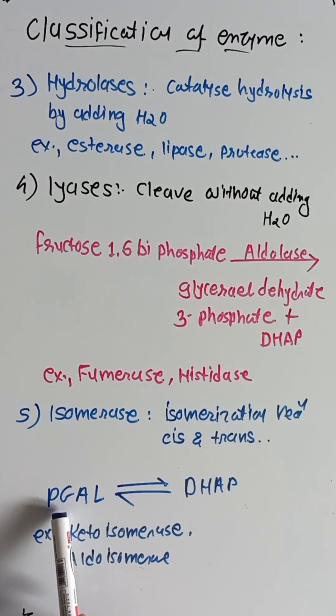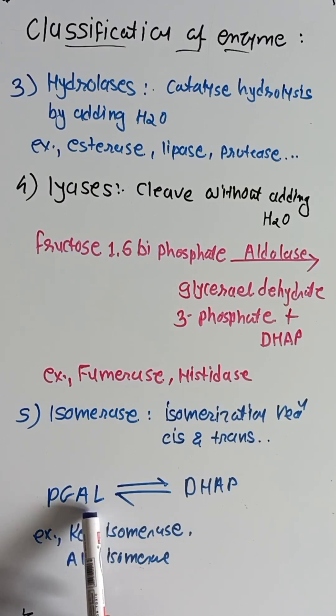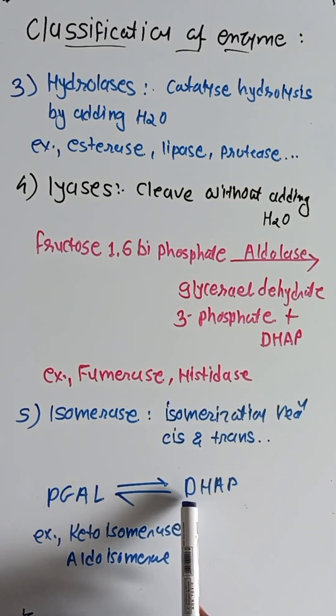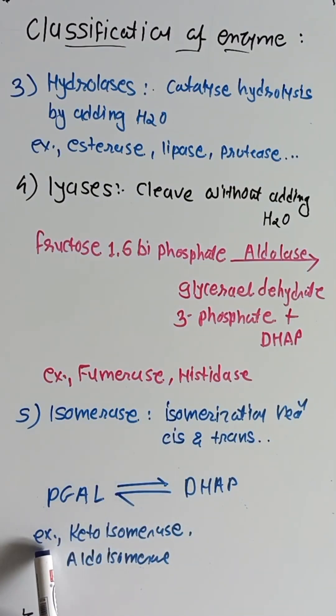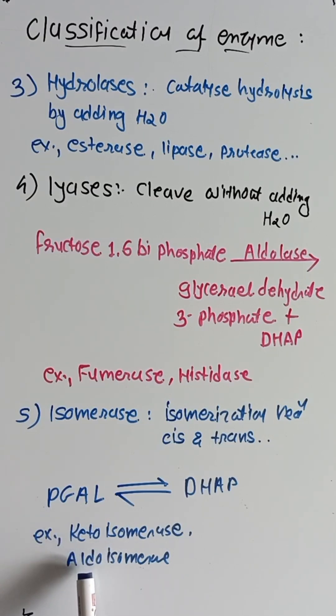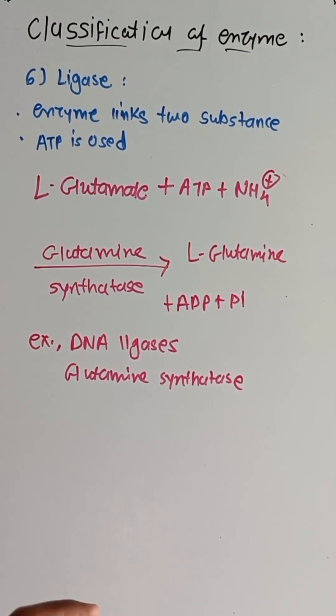The fifth class is isomerases, which catalyze isomerization reactions including cis and trans conversions. Here you can see phosphoglyceraldehyde and dihydroxyacetone phosphate in a reversible reaction. Examples of isomerases are ketoisomerase and aldoisomerase.